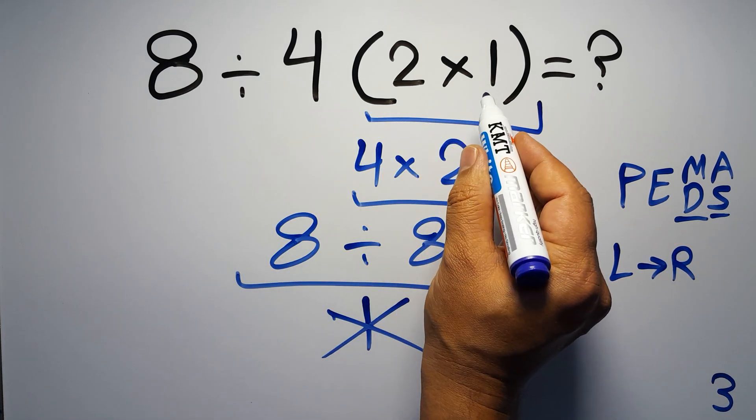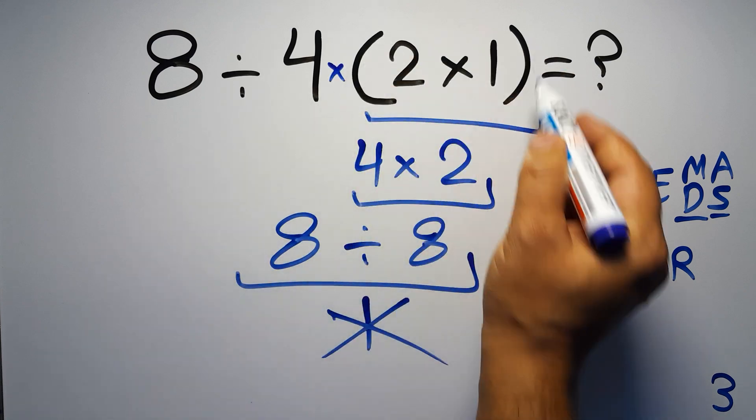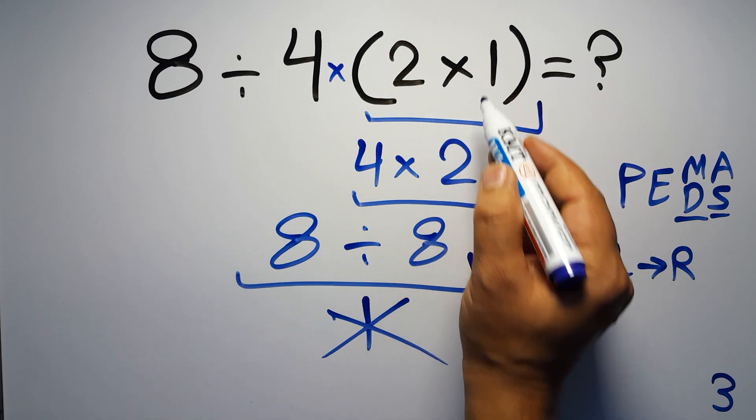In this expression, we have one division, one multiplication, and one parentheses. Inside this parentheses, we have one multiplication.